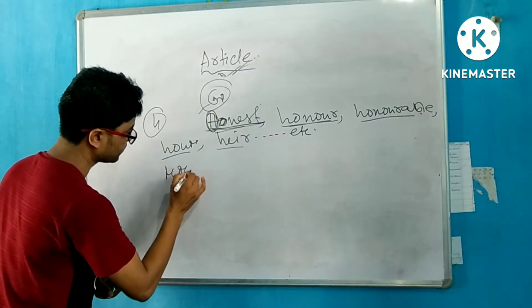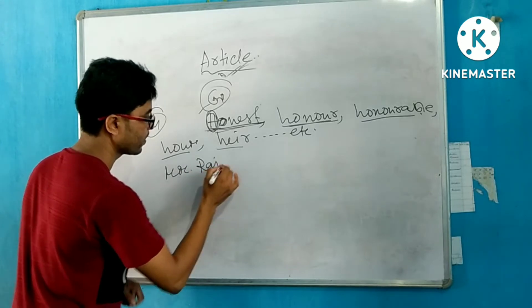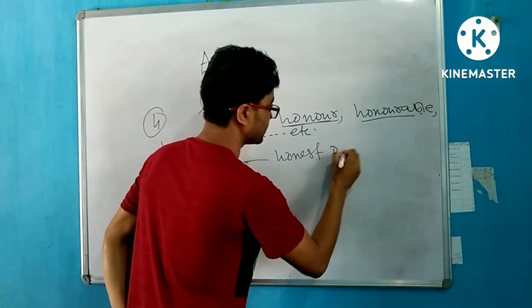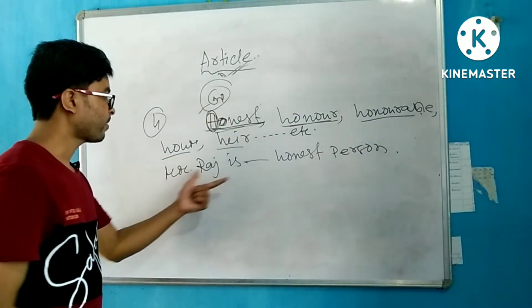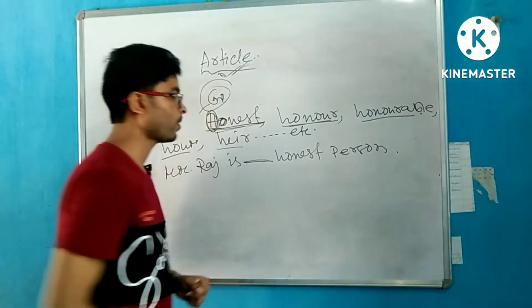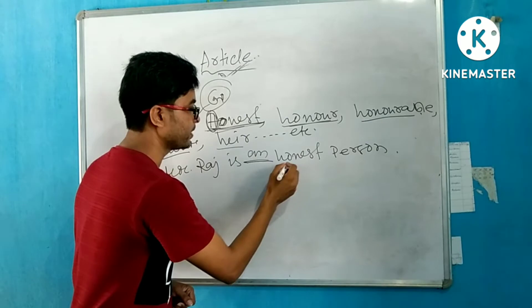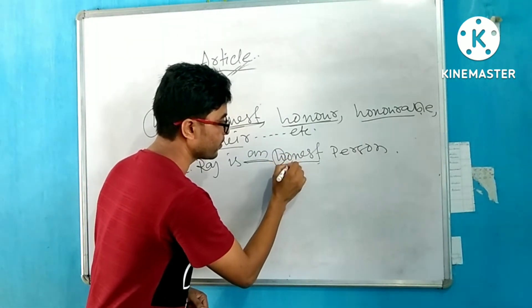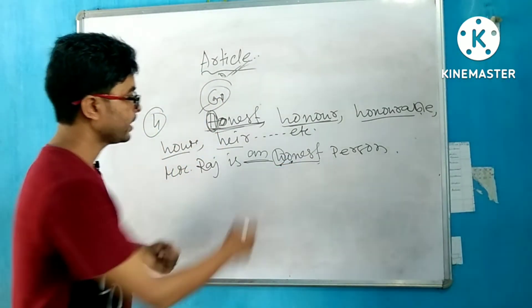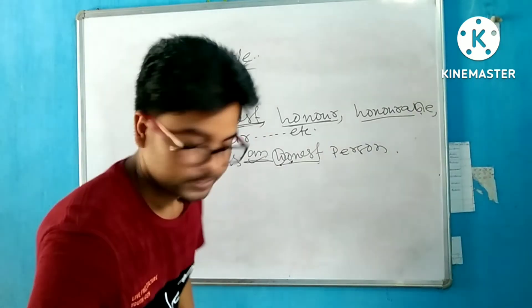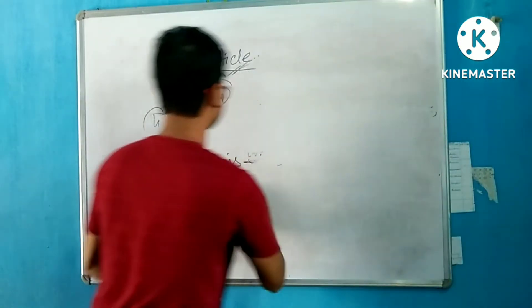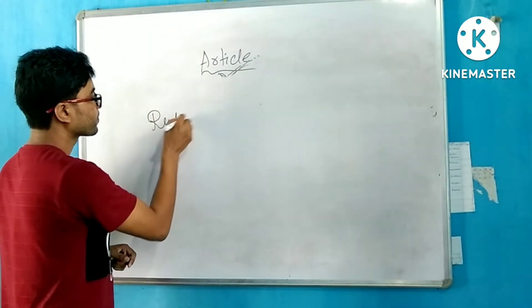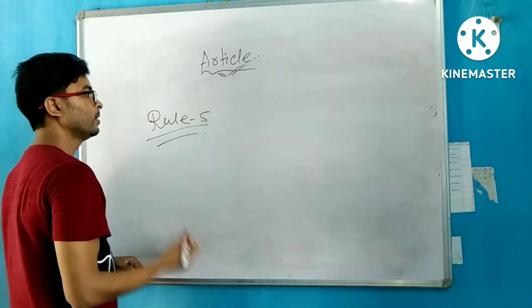For example: Mr. Raj is an honest person. We use An article because honest is pronounced with a vowel sound - the H is silent.